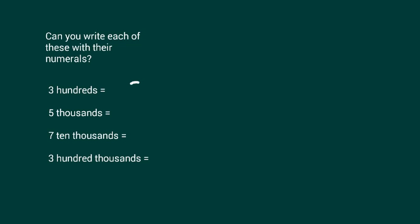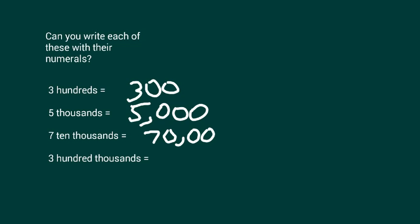Did you come up with three hundreds equaling three hundred, or written as 300? Five thousands is written as 5,000. Hopefully you placed your comma there. Seven ten thousands, 70,000, and three hundred thousands is written as 300,000.